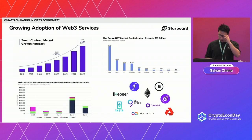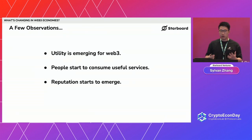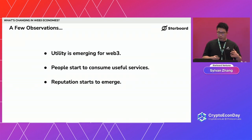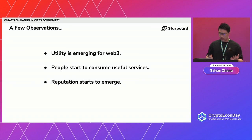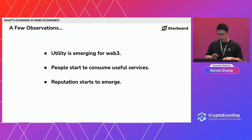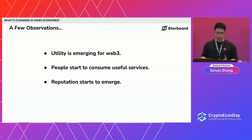A few observations of Web3 economies. One, we are gradually seeing utility emerging for Web3. A big criticism of Bitcoin and early crypto economics was that there's no utility — just a token economy. But we've seen that changing because of useful work and the emergence of a Web3-native commodity that everyone needs, which is data and cloud services. We're probably going to witness the transition from just a token economy to mass adoption of decentralized cloud services, not just limited to Web3.